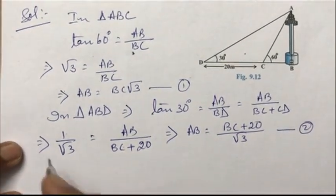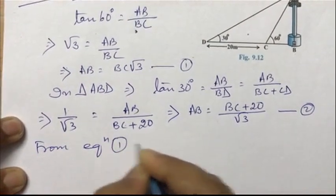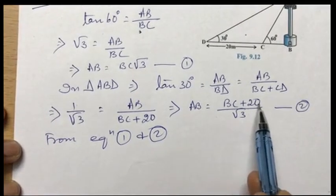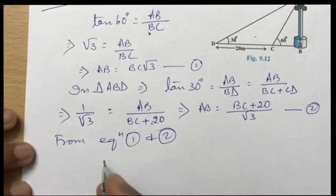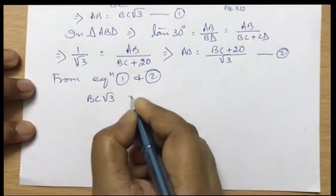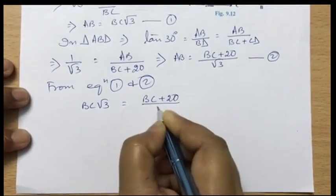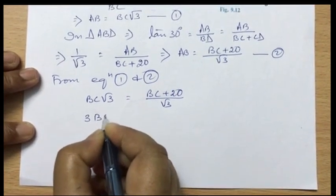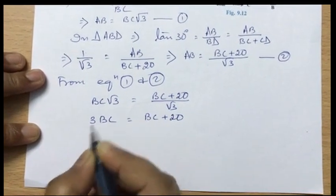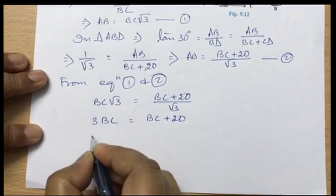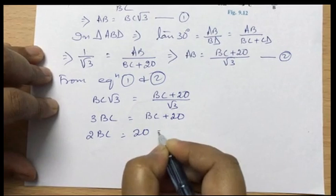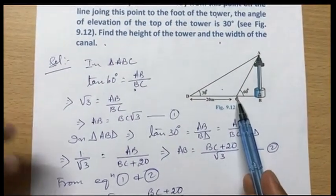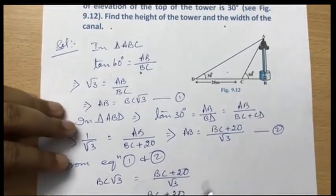From equation 1 and 2: AB equals BC times root 3, and AB equals (BC plus 20) by root 3. Equating: BC times root 3 equals (BC plus 20) by root 3. Cross multiplying, root 3 times root 3 gives 3, so 3BC equals BC plus 20. Therefore 2BC equals 20, which gives BC equals 10.